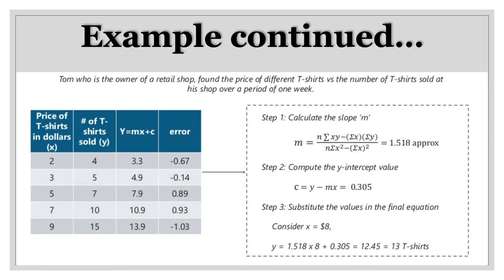Suppose that Tom wants to find out how many t-shirts of price 8 dollars he can sell at this retail shop. Now your x is equal to 8 dollars. To find out how many t-shirts he can sell, all you have to do is substitute x equal to 8 in your final equation and you get y equal to 12.45, which is basically 13 t-shirts. This means that if Tom starts selling a new t-shirt of 8 dollars, he will sell around 13 such t-shirts. This is how you use regression to make predictions.